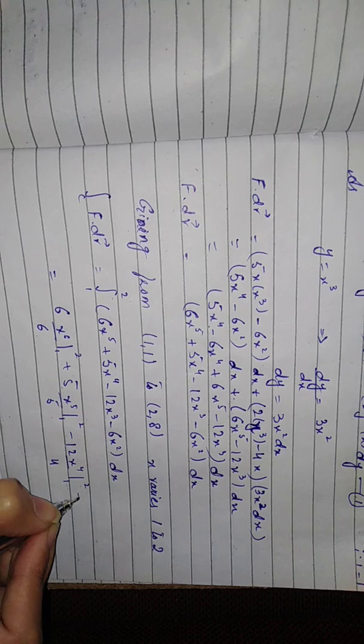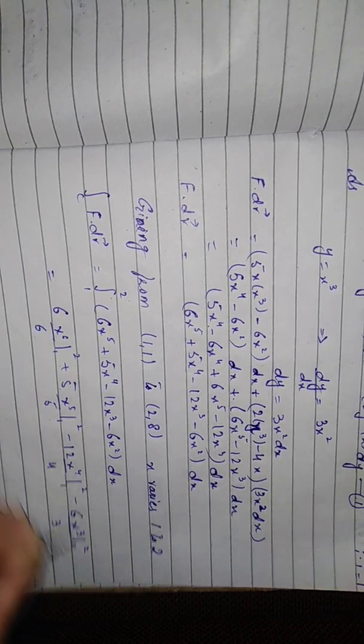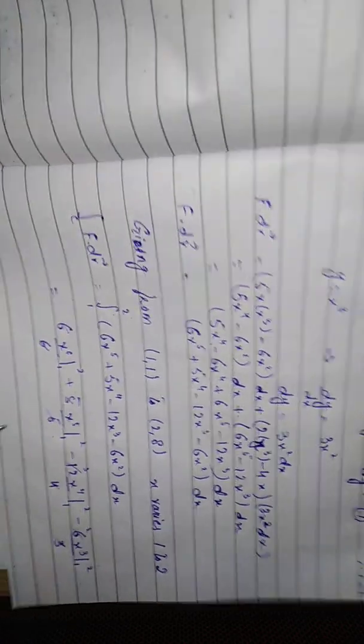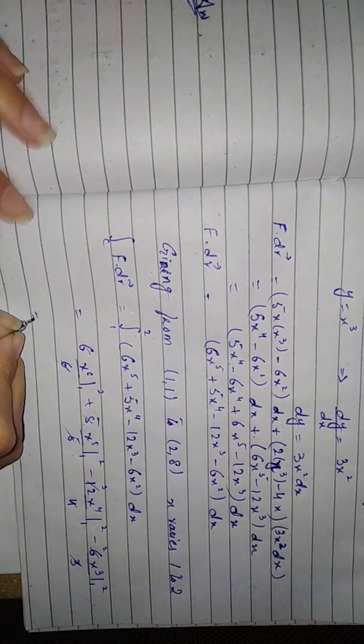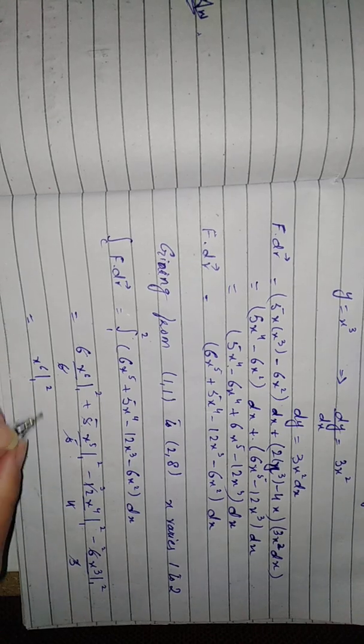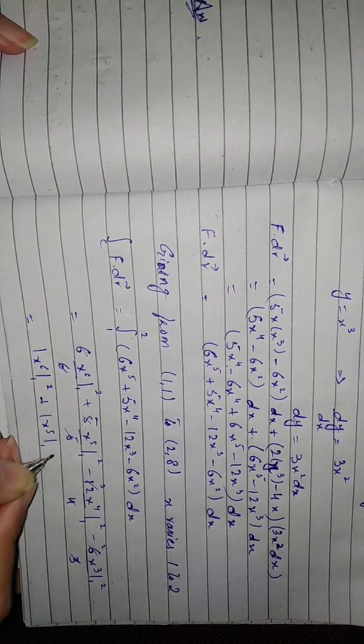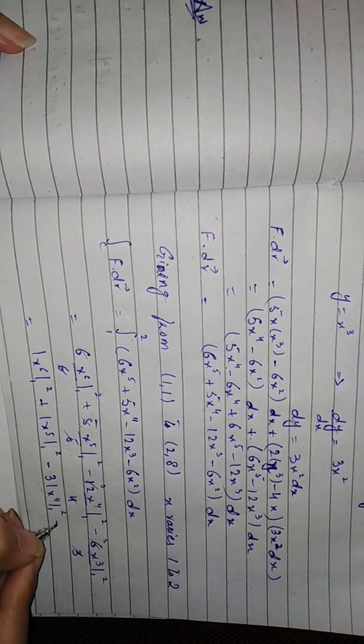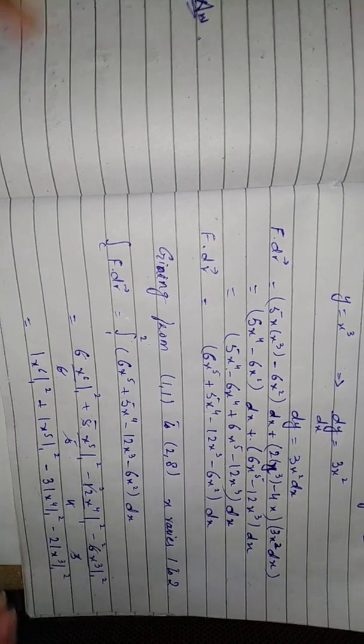These will cancel and we have the answer: x to the sixth plus x to the fifth minus 3x to the fourth minus 2x cubed, all with limits 1 to 2. Now simply we will put limits on this.